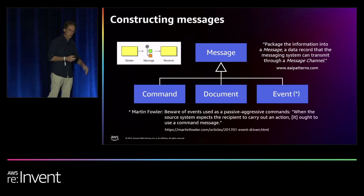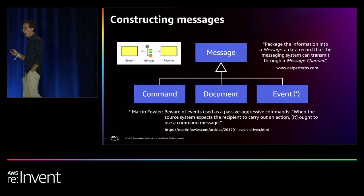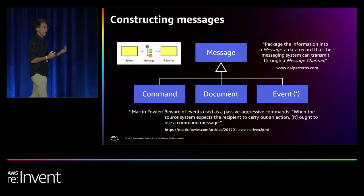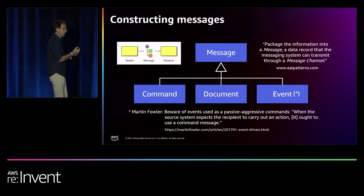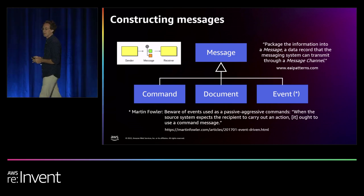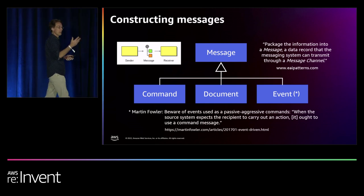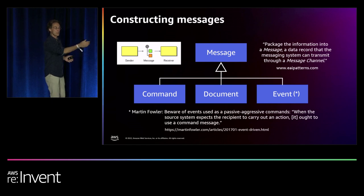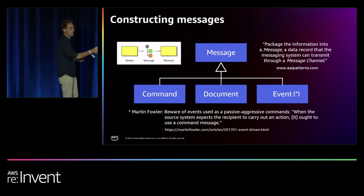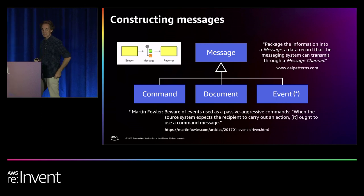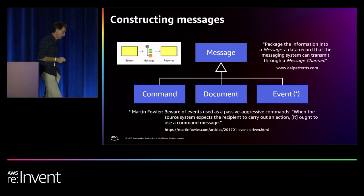What's in the message you can choose — you can choose the semantics. You can tell system B to do something (that's a command), send a document, or tell it that something happened (that makes it more like an event). Many people believe that making it an event somehow immediately makes it loosely coupled — be careful there. Martin Fowler has warned against making things look like an event while having an expectation of what's going to happen. He calls this 'passive-aggressive commands' — you're sending an event but really hinting 'don't you really want to do this thing next.' That's a disguised command, so be careful with those semantics.